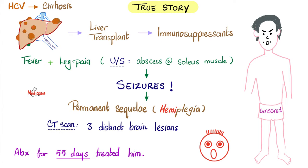As you know, immunosuppressants tend to suppress immunity. So he developed fever and some leg pain. Ultrasound of that lower leg showed abscess in the soleus muscle. Then he started seizing and convulsing vigorously. It was so bad it left permanent sequelae, namely hemiplegia. They did a CT scan of the brain, only to find three distinct brain lesions.